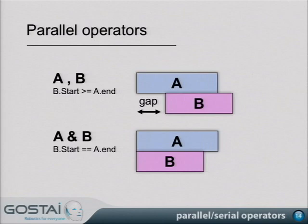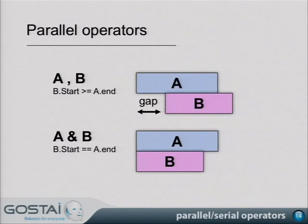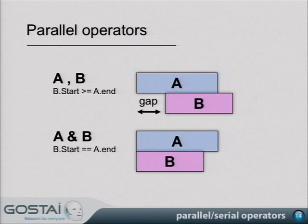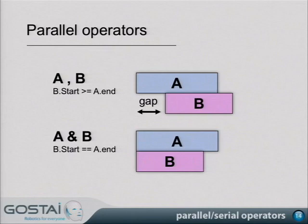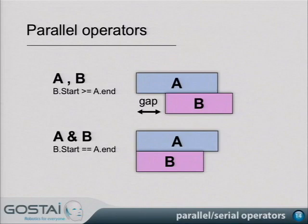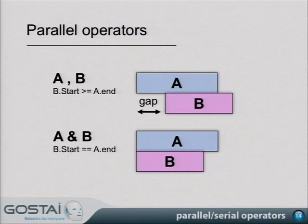On the parallel side, 'A & B' means A and B start at exactly the same time — a very strong constraint, useful in robotics. Then there's 'A , B' (comma), which is a looser version: it puts A in the background so you don't block the flow of execution. Even if A is not over, B will start as soon as it's ready. It has the intuitive meaning of detaching — though going into full technical details would take too long.